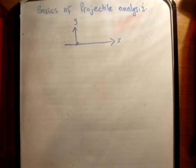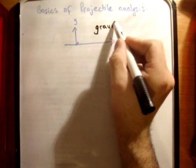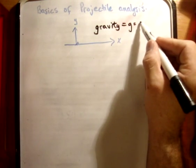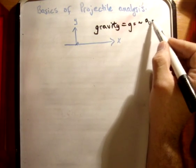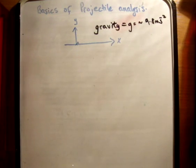So we said that in projectile equations, the only acceleration that we're going to talk about is gravity, which we will call g. And its value is approximately 9.8 meters per second squared. So that's gravity, and that's the only acceleration.